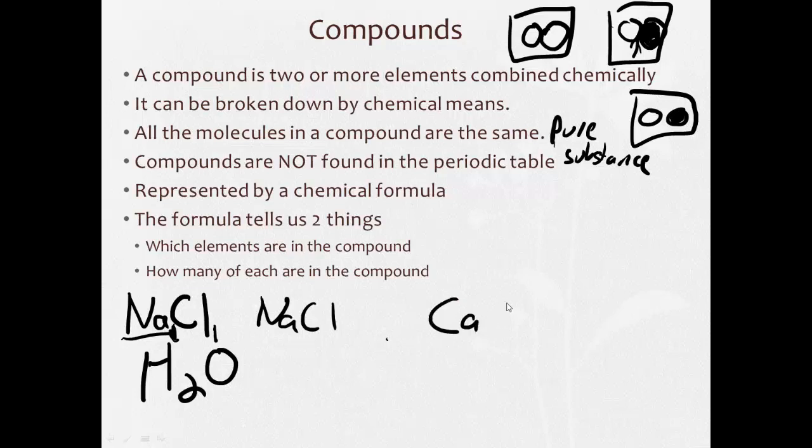Ca(OH)2, calcium hydroxide. We'll learn a little bit more about this later in the year. This tells us that there's one calcium. And since this is in parentheses, just like parentheses in math class, we distribute the two. So this tells us that there's one calcium, two times one, two oxygens, two times one, two hydrogens.